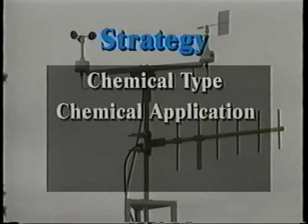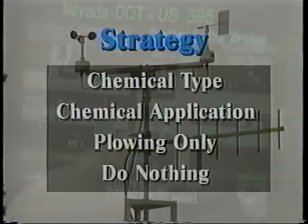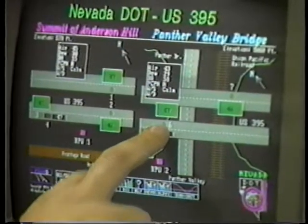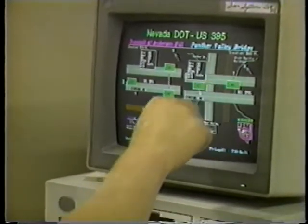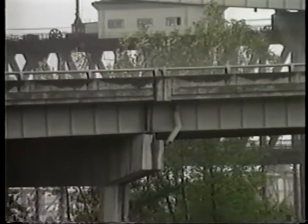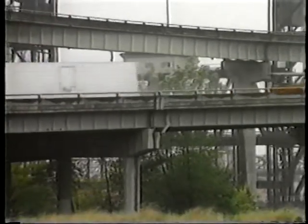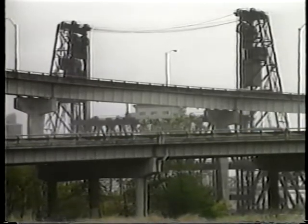Choice of chemical and application rate, use of plowing alone, or doing nothing can all be informed decisions based on knowledge of the local conditions provided by road weather information systems. Pavement temperature sensors provide real-time data that can be used to predict several hours in advance when the pavement temperature will drop below freezing, allowing time to plan efficient operations. Conductivity sensors indicate the relative chemical concentration on the pavement surface, helping guide the decision whether to apply more chemical. The newest pavement sensors can measure the freezing point of the chemical solution on the pavement and warn if the solution is likely to freeze.